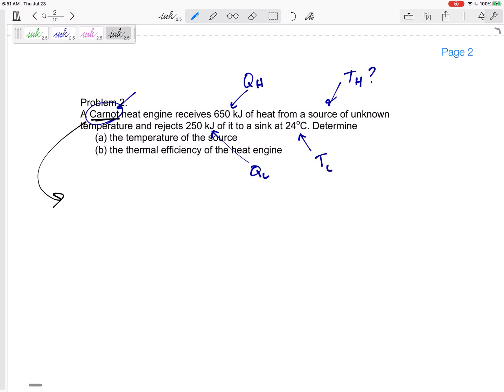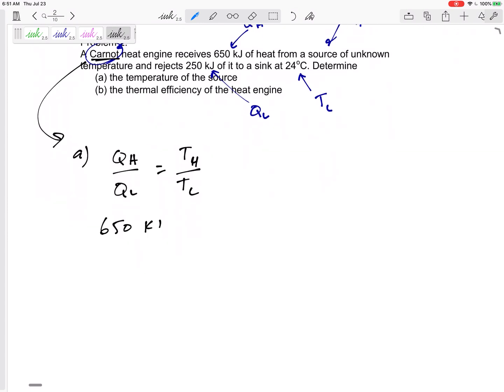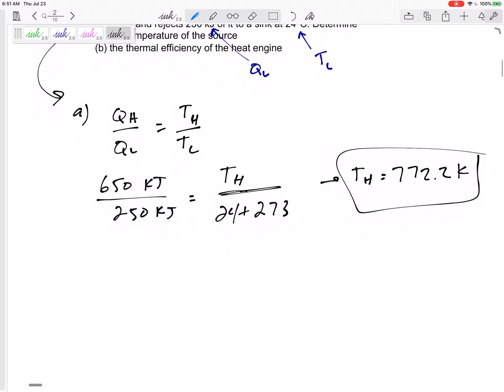Determine the temperature of the source and the thermal efficiency of the heat engine. For Carnot, and only for Carnot, the ratio of Q_H to Q_L is T_H to T_L. Since we know Q_H, Q_L, and T_L, we can find T_H. 650 kilojoules over 250 kilojoules equals T_H over 24. I cannot leave it as 24 - 24 has to be absolute: 24 plus 273. That would give me a T_H of 772.2 Kelvin.